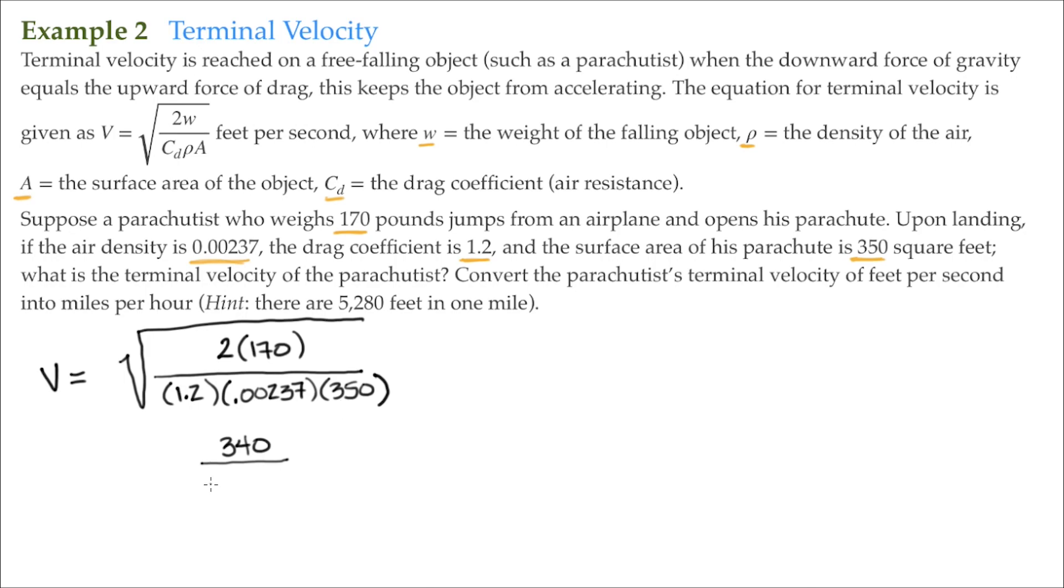That all comes out to be 0.9954. And of course, we're taking the square root of that. We're still inside our radical here, still inside this grouping symbol. So we'll do 340 divided by 0.9954.